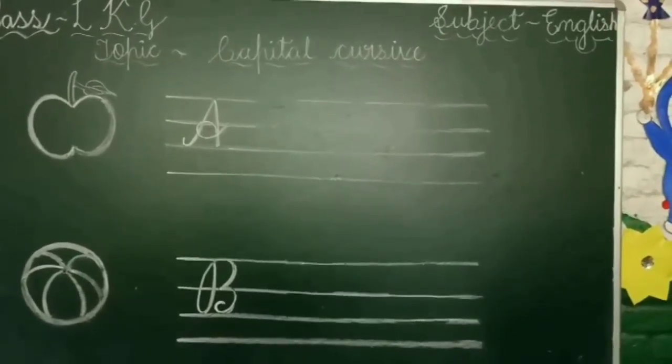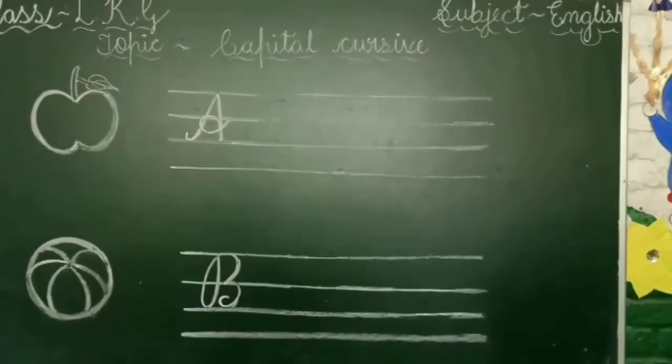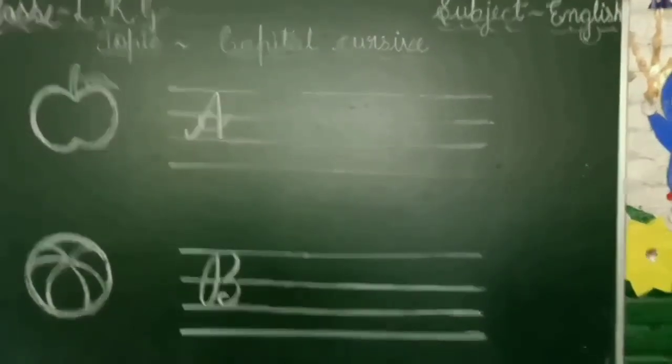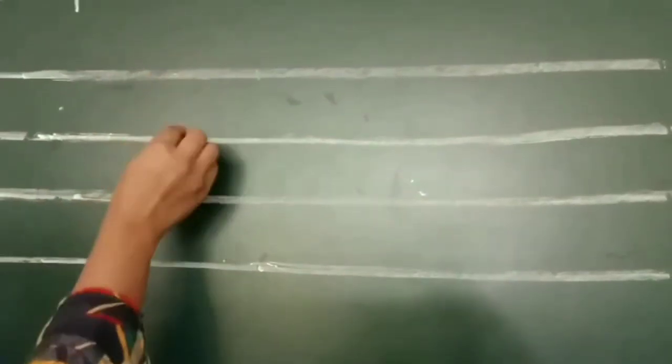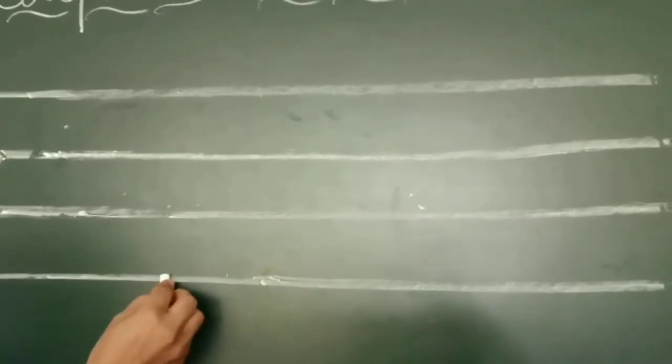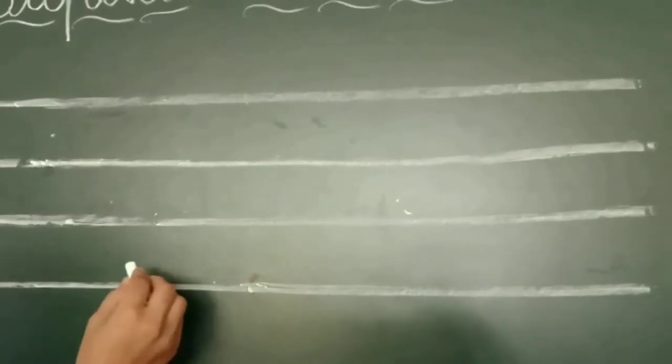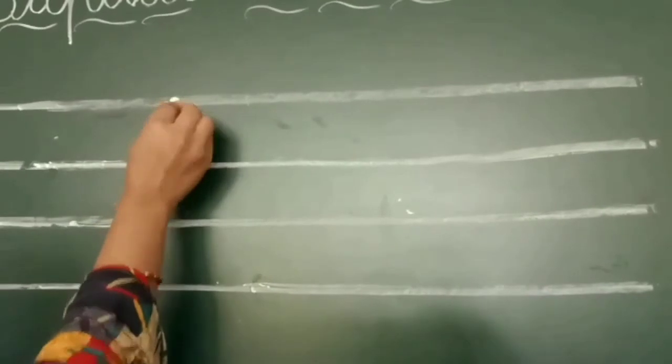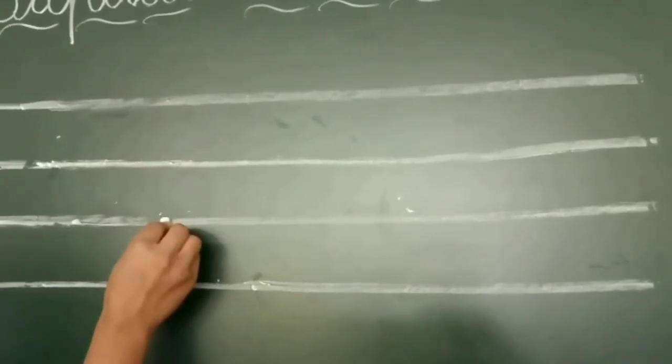A, this is our capital cursive letter A. How to make? See, here is one, two, three and four lines are here, but we will use only one, two and three lines.